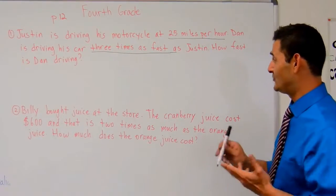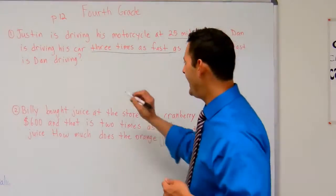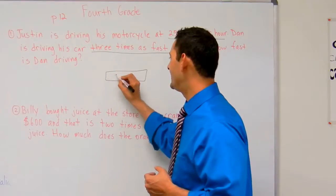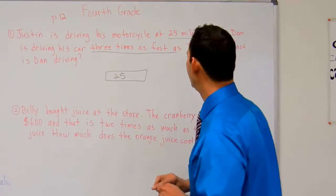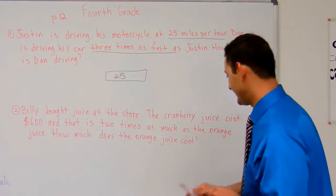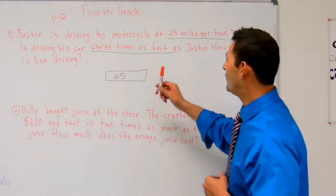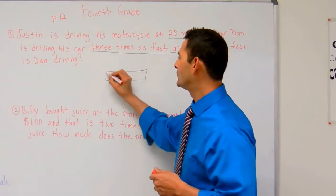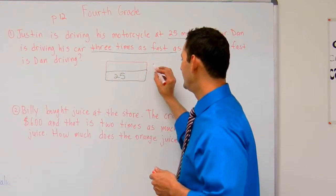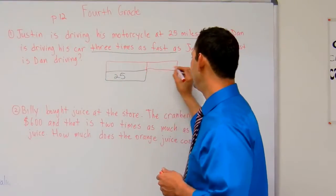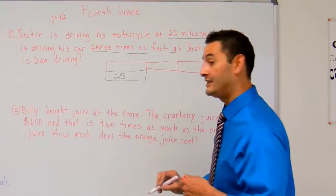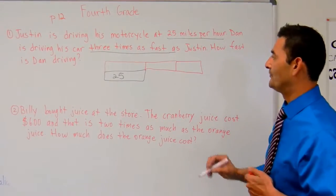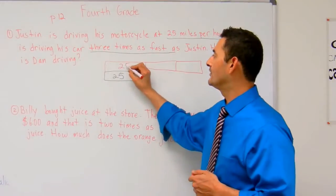How fast is Justin driving? That's the information we have. Justin is driving 25 miles per hour. How fast is Dan driving? Dan is driving his car 3 times as fast as Justin. So 3 times as fast would be 1, would be 2, and would be 3. Each one of these is going to be worth 25.